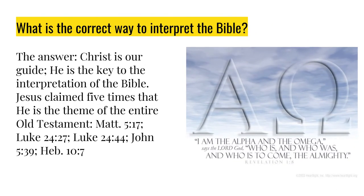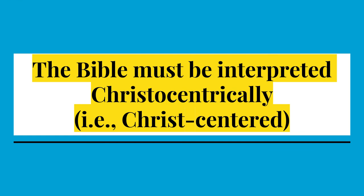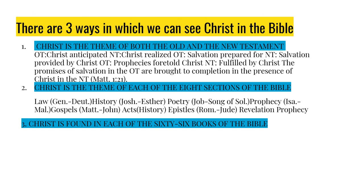What is the correct way to interpret the Bible? The answer is that Christ is our God — he is the key to interpretation of the Bible. Jesus claimed five times that he is a theme of the entire Old Testament, and we have scripture evidence for that. The Bible must be interpreted Christ-centrally; Christ has to be in the center of it and no one else. In conclusion, there are three ways in which we can see Christ in the Bible. Number one: Christ is the theme of both the Old and the New Testament. Christ was anticipated in the Old Testament; prophecies foretold Christ, and in the New Testament, fulfilled by Christ. The promises of salvation in the Old Testament are brought into completion in the presence of Christ in the New Testament, found in Matthew 1 and 21.